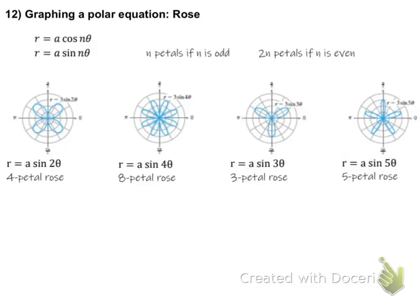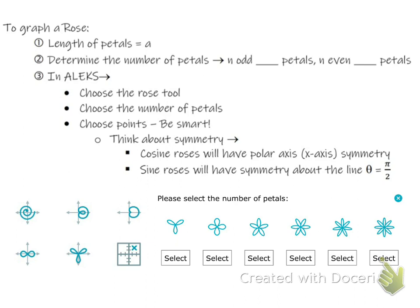We're going to look at graphing roses. You can see the formula for the rose — what's really going to matter is the number of petals. The petal length is 'a', the coefficient of either sine or cosine. If the coefficient of theta, your n value, is odd, you will have n petals. If n is even, you'll have twice that number of petals.